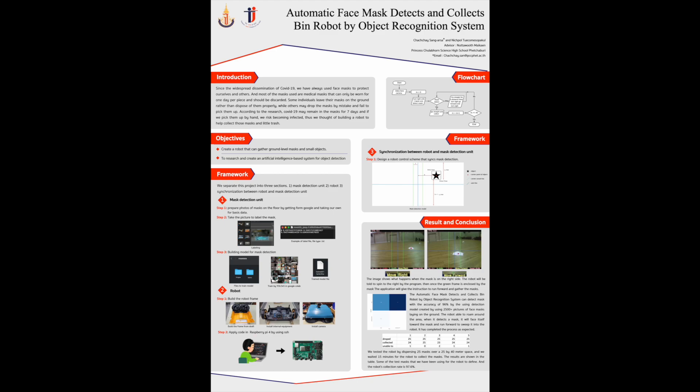We assign robot control based on what is seen in the mask detection. As you can see from the picture, there are two lines: the blue one and the green one. The blue line separates the camera's vision into four sectors, and the green line indicates the front of the camera. We simulate the detected object into stars for easy understanding, and create a red dot to define the center of the object.